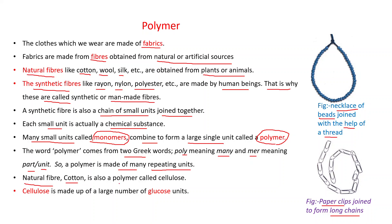Some natural fibers are also polymers. For example, natural fiber cotton is a polymer called cellulose. Cellulose is made up of a large number of glucose units — glucose is the monomer, and when a number of glucose units are repeated, they form cellulose. That is why cellulose is a polymer.